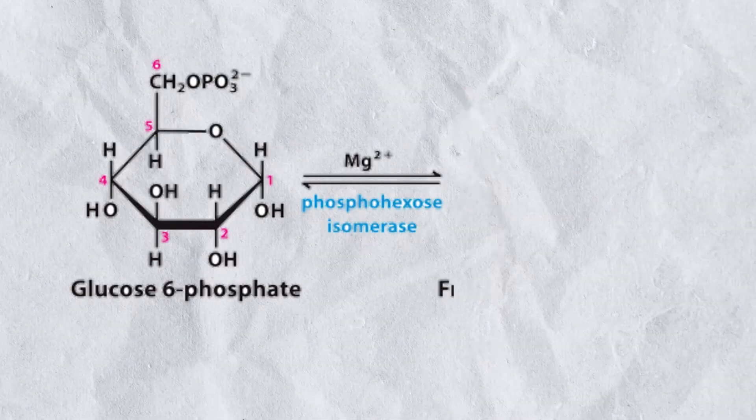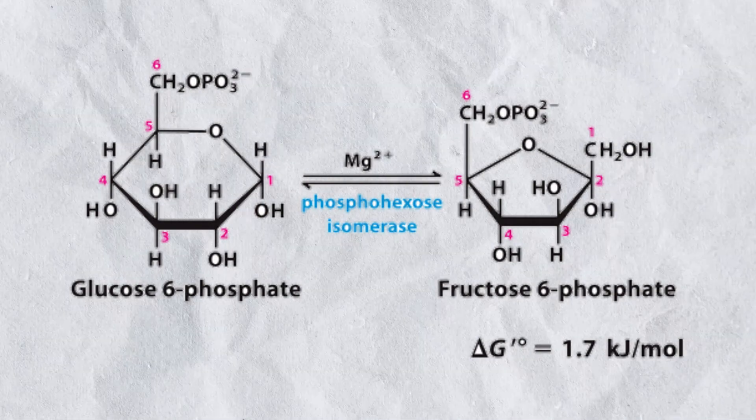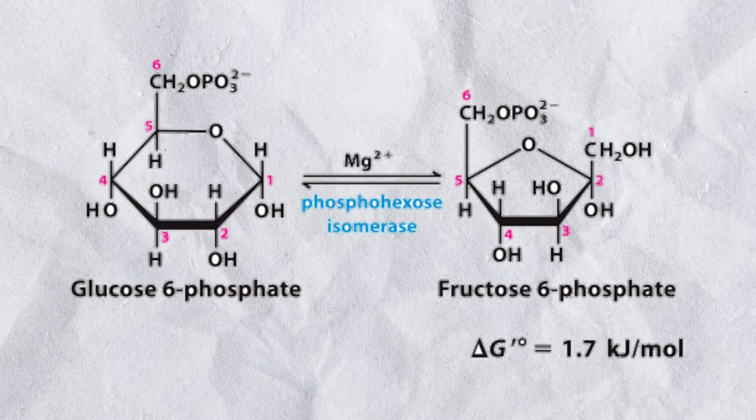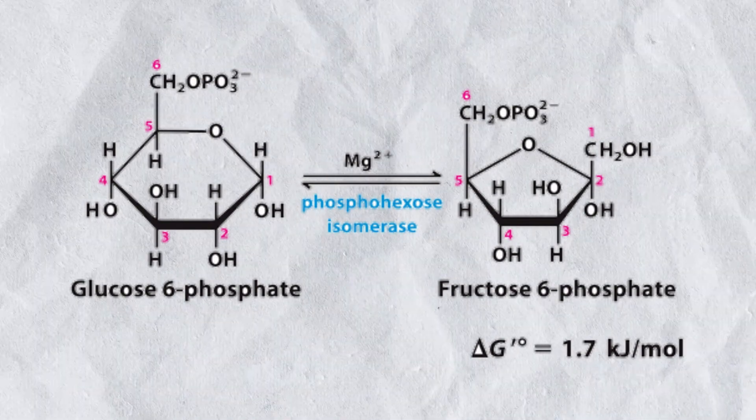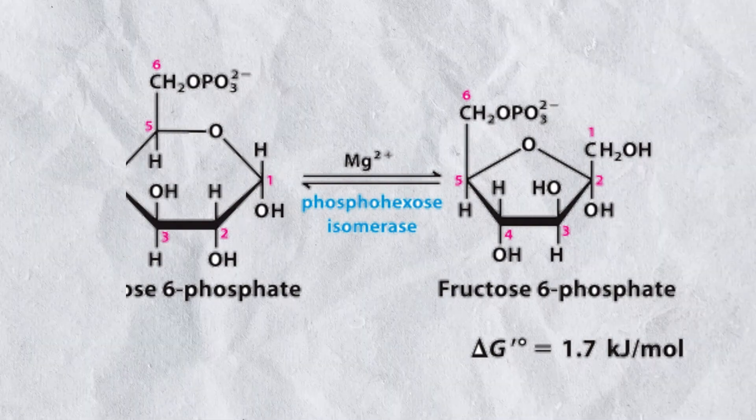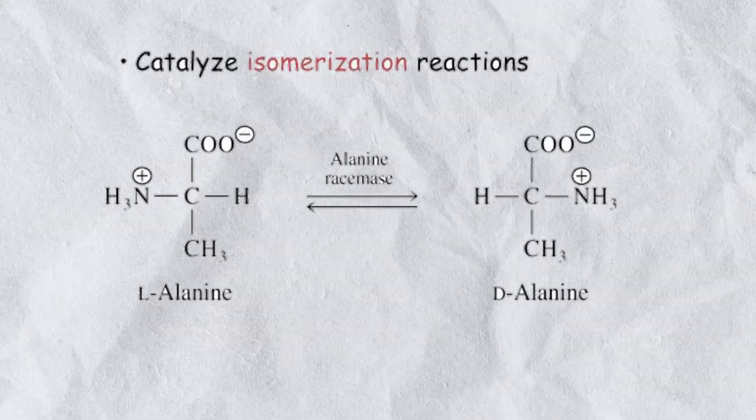Type number five: Isomerases. Speed up isomerization reactions. These are reactions in which all the original atoms in the reactant are retained but are rearranged to form an isomer of the reactant. Isomers are molecules with the same chemical formula but different arrangements. Examples include glucose phosphate isomerase and alanine racemase.